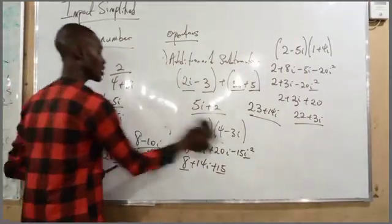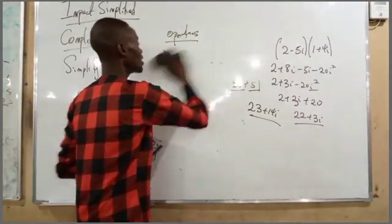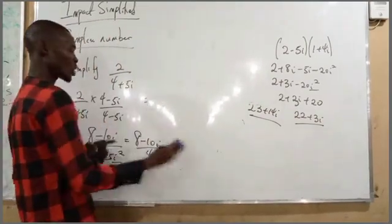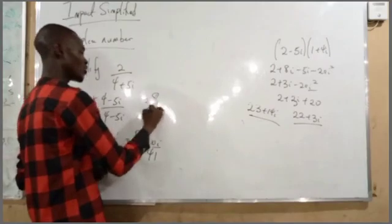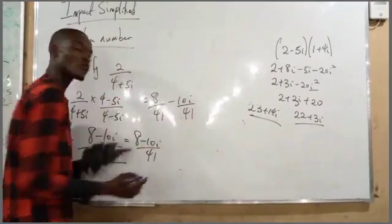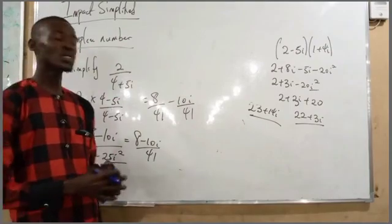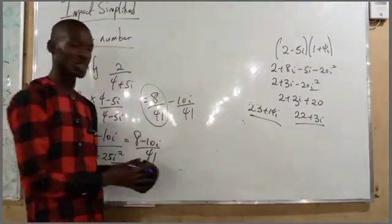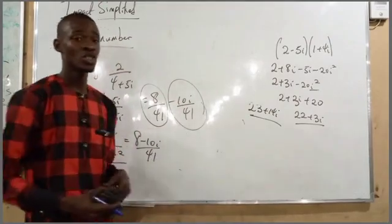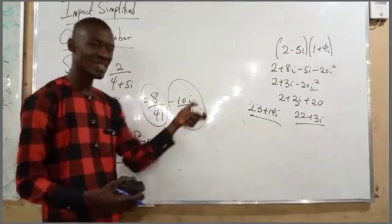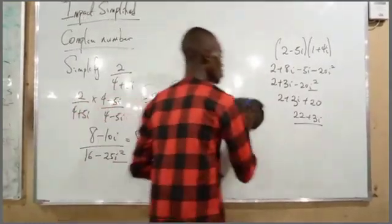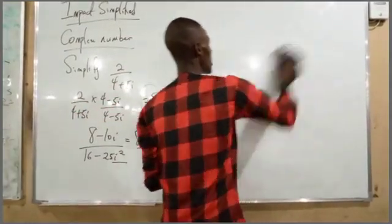We can split this answer into its real and imaginary parts. This gives us 8 over 41 minus 10i over 41. So the real part is 8 over 41, and the imaginary part is minus 10 over 41.